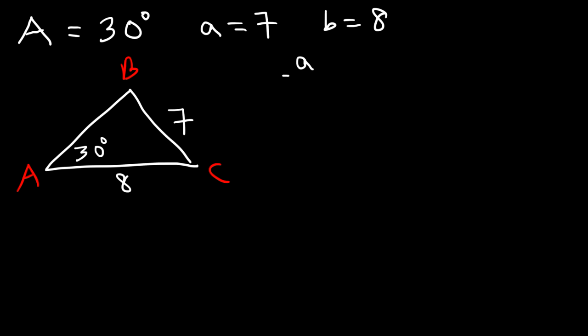Anytime you solve for an angle using the law of sines, find a supplementary angle by subtracting from 180. Then add that second angle to the pre-existing angle: if the sum is less than 180, you can have two triangles. If the sum is greater than 180, there is only one solution and one triangle can be formed.